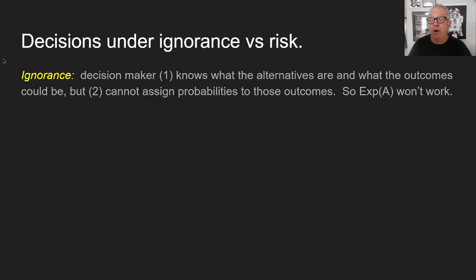Now let's consider the primary examples for Chapter 3: decisions under ignorance. These are cases where the decision maker knows what the alternatives are and what the outcomes could be, but can't assign probabilities to those outcomes. Since we don't have that probability multiplier, we can't use expected value the way we did in previous cases.